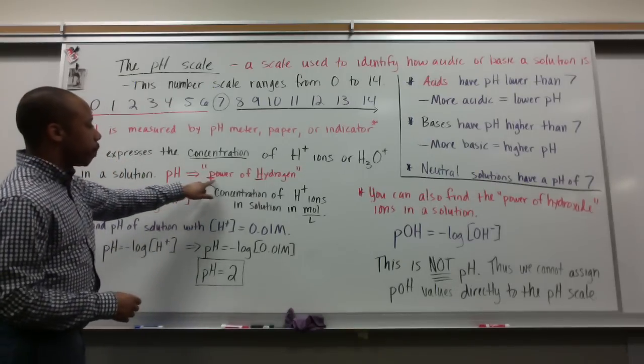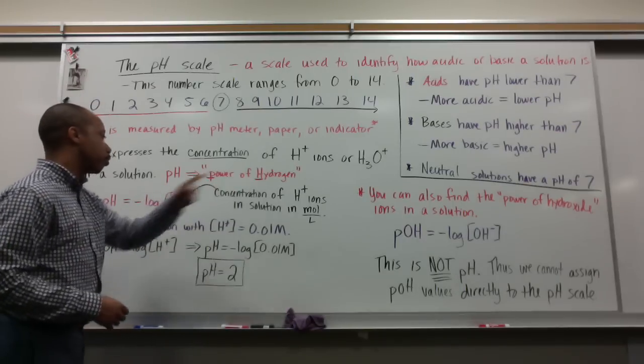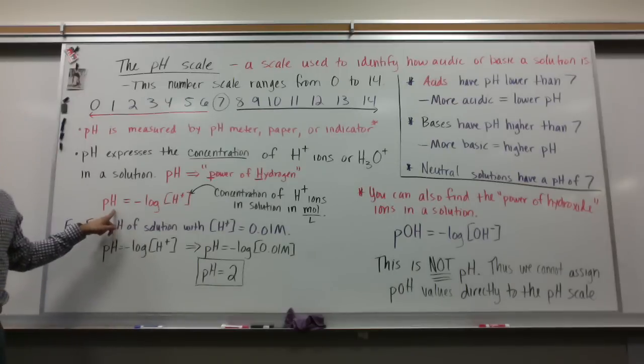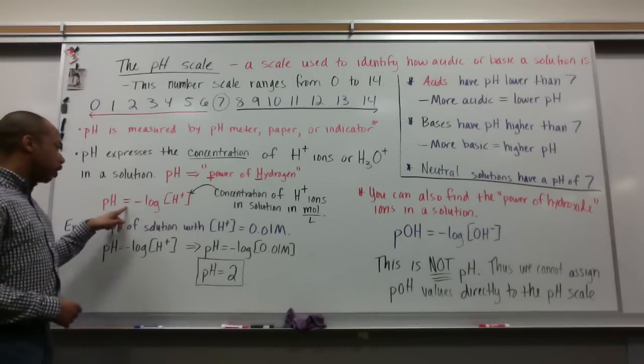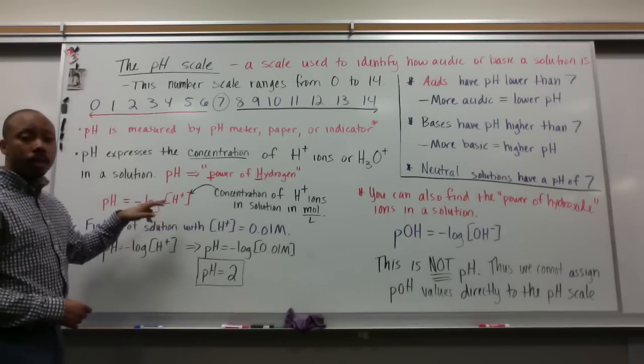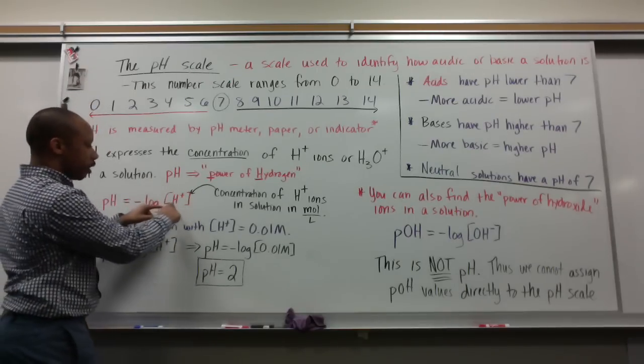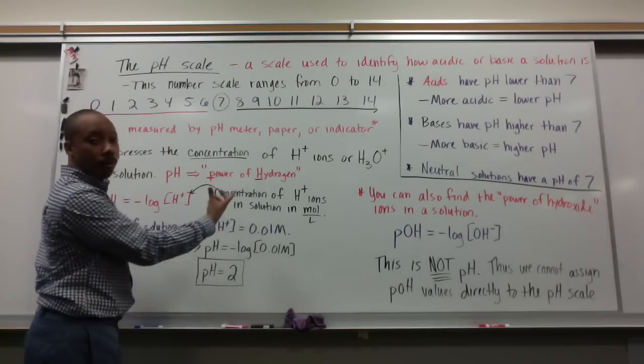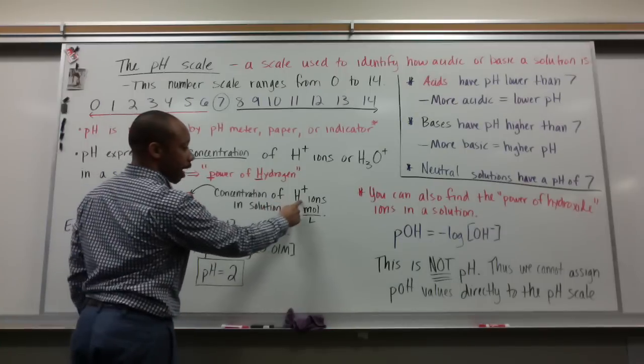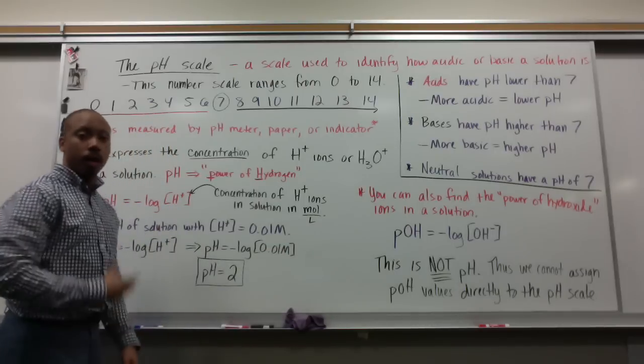pH stands for the power of hydrogen. It's expressed mathematically by this equation: pH equals the negative log times the concentration of hydrogen ions. These brackets mean concentration of, in this case the hydrogen ions in solution, measured in moles per liter or molarity.